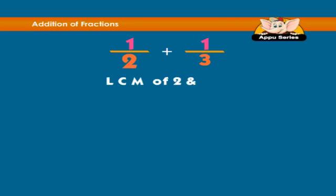The LCM of two and three is six. So, which is the LCM, is our new denominator.